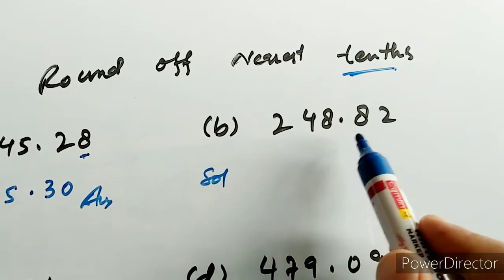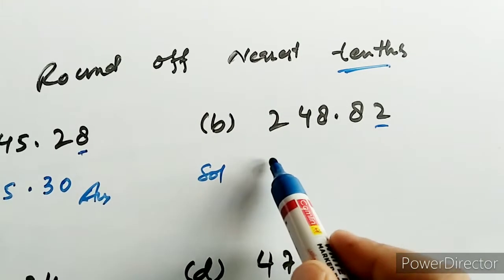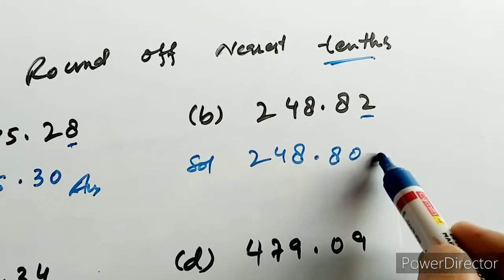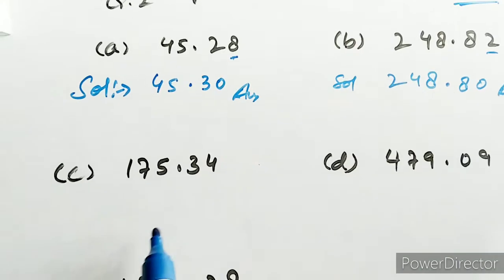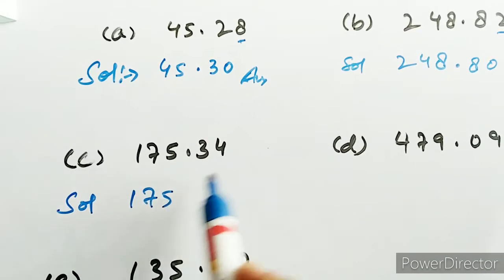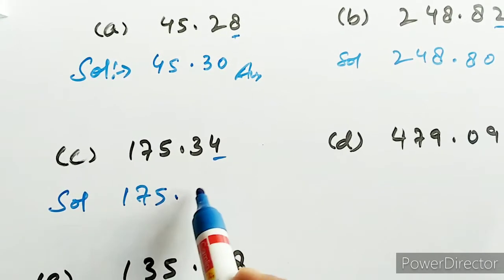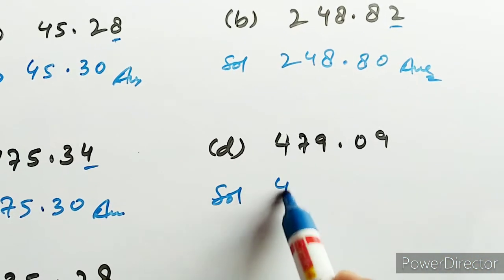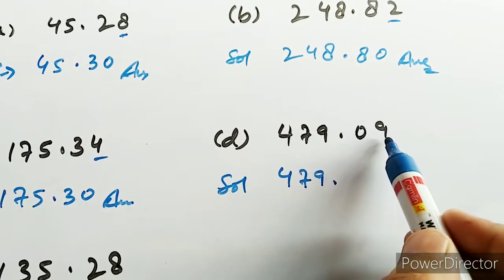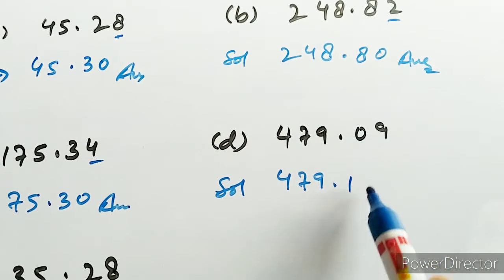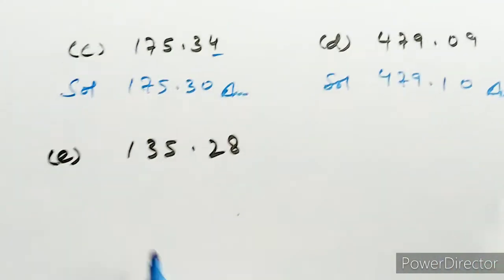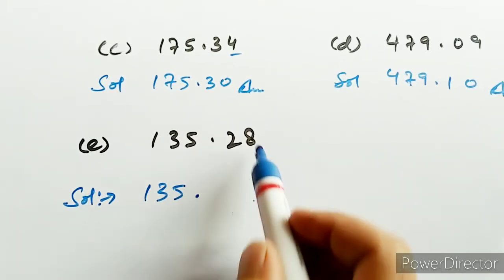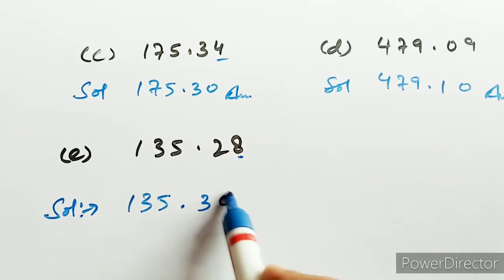इसमें देखे यहां पे 248.82 है — point के बाद जो दूसरा digit है उसको करना है। यहां पे 2 है तो plus 1 नहीं करना है, तो यह रहेगा 248.8। अगले में 4 को करना है — पीछे 3 है तो 3 का 3 ही रहेगा। और यहां पे 479 में 9 है — plus 1 करना पड़ेगा, 0 में 1 डालेंगे तो 1 हो जाएगा। E part का solution: 135 — 8 है तो plus 1 करना पड़ेगा, 2 की जगा 3 हो जाएगा और 0।